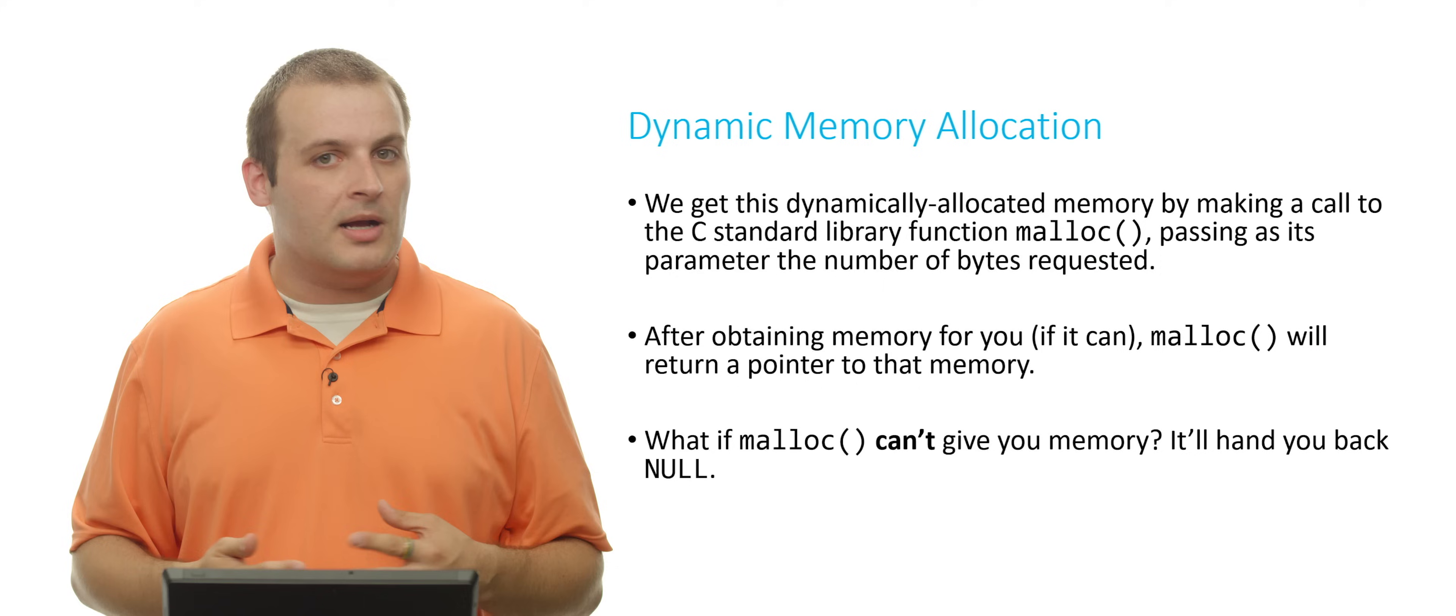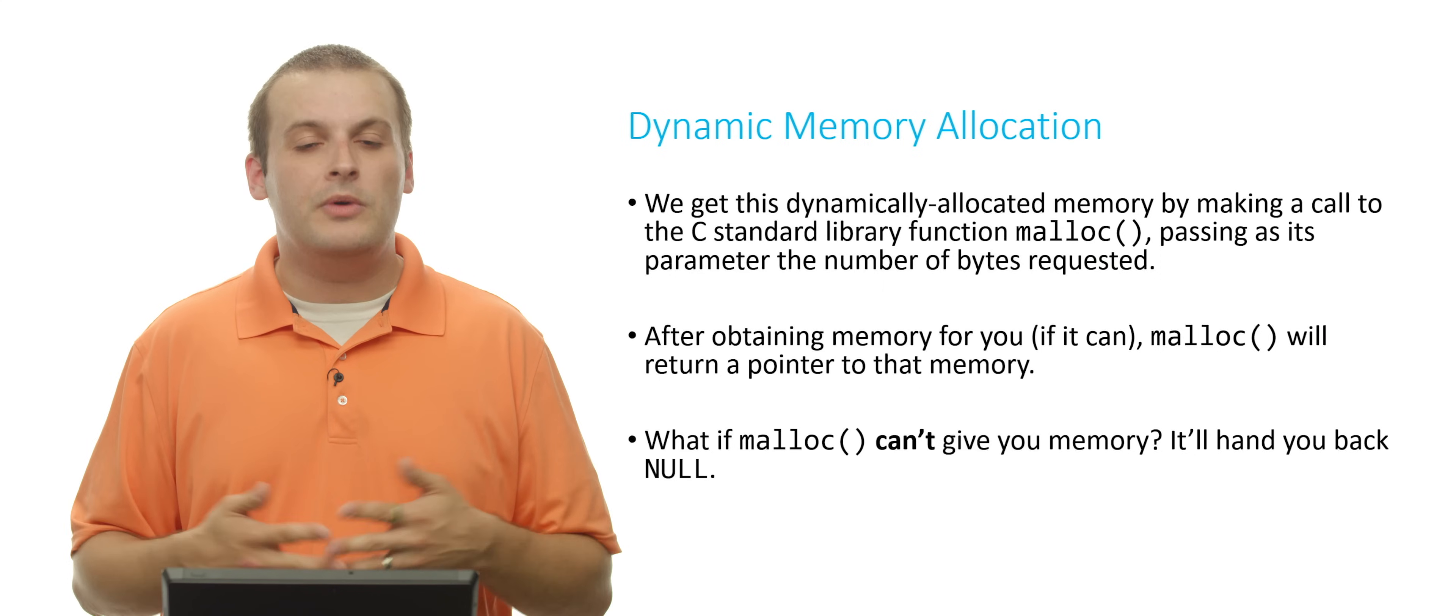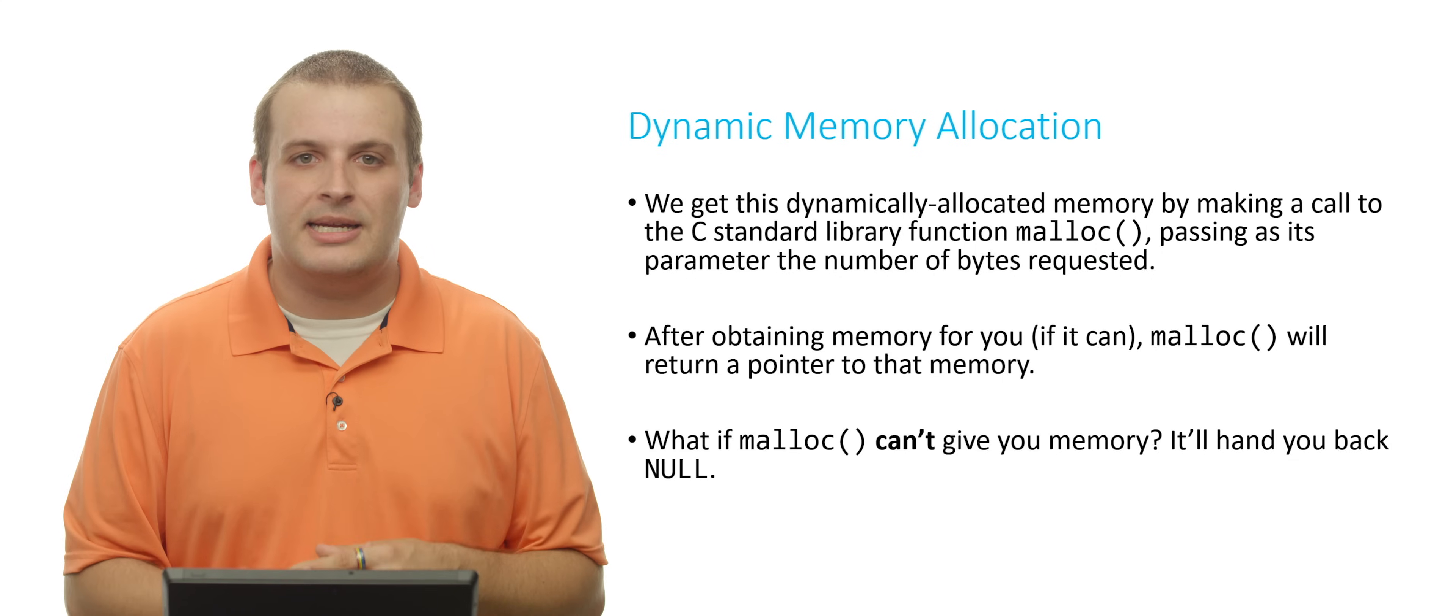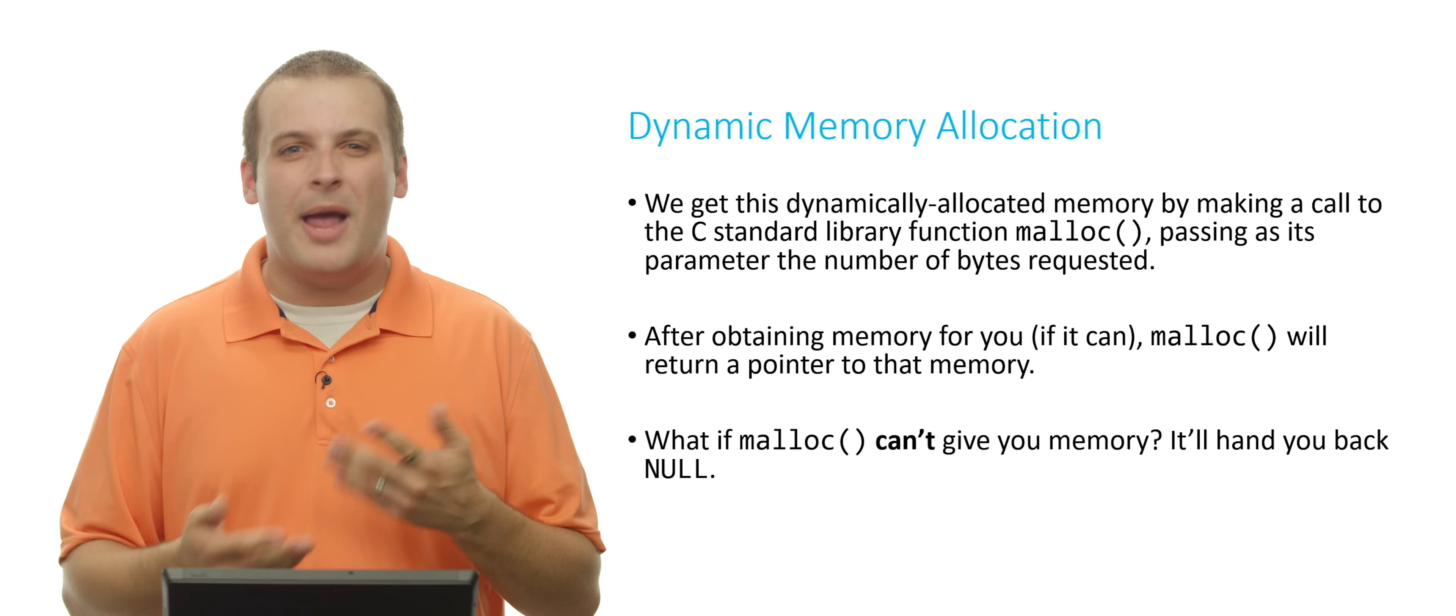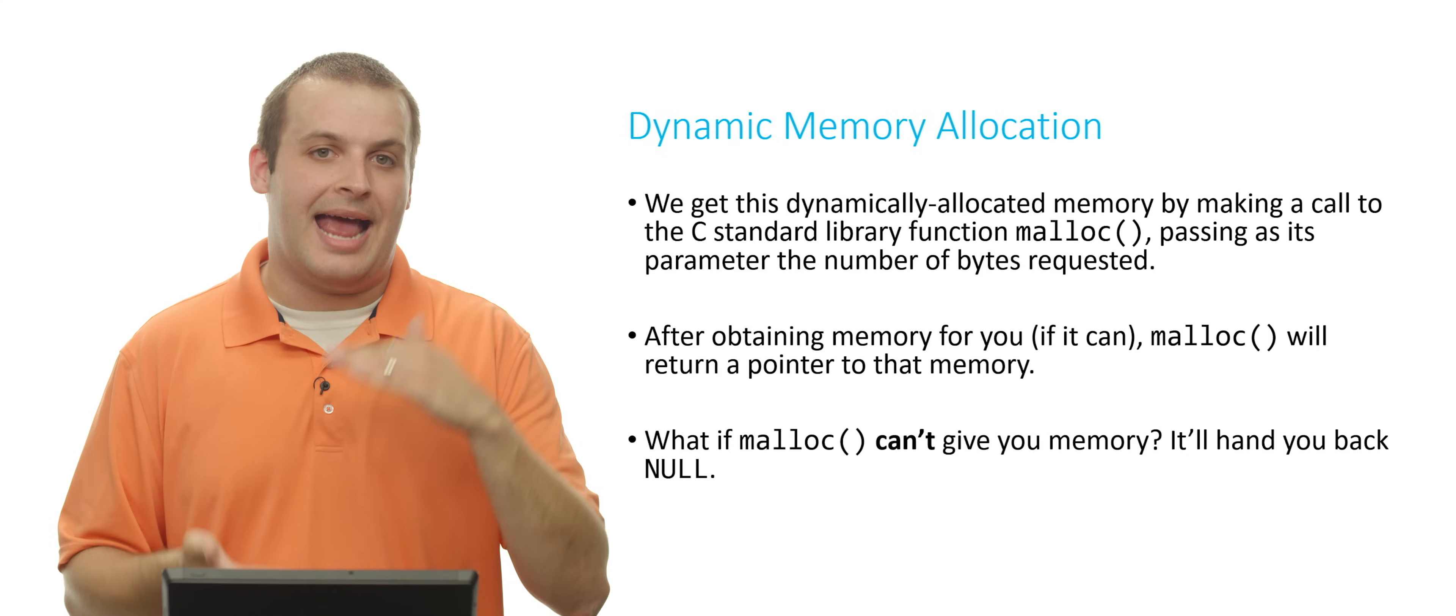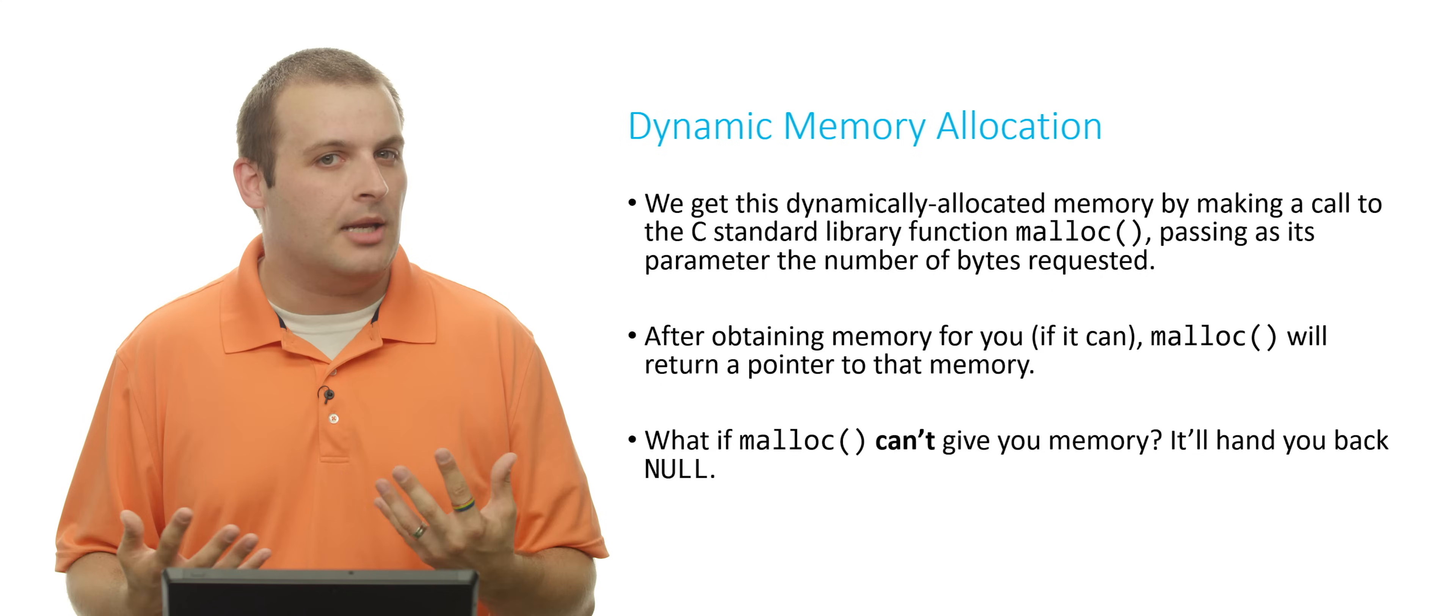Now, it's possible that malloc might not actually be able to give you back memory, in which case it's going to return to you null. And so one of the first rules to remember about dynamically allocated memory is to always check for null after malloc. Now, why might this happen? Maybe you've run out of memory. The stack and the heap have just completely run out. Or there's been some sort of catastrophic failure that we can't predict.